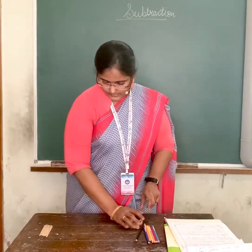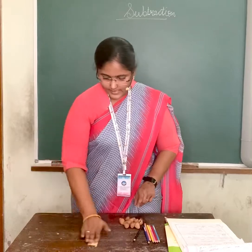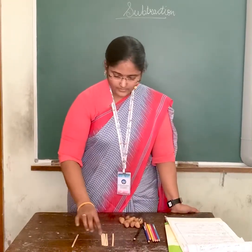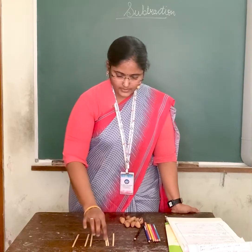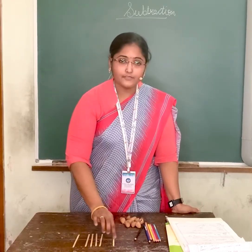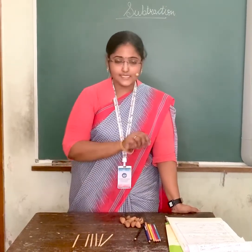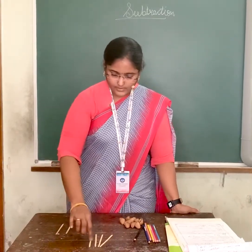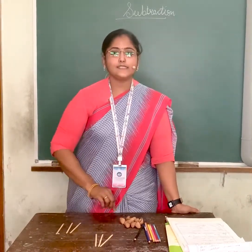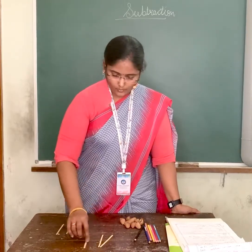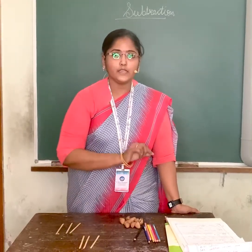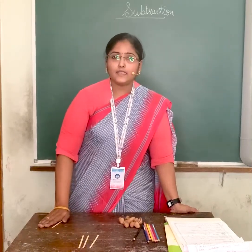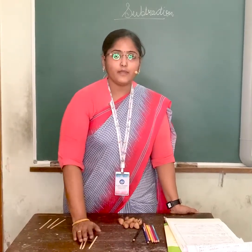Next, I have some sticks here. Let's count how many there are: 1, 2, 3, 4, 5, 6. From 6, I will take away 3: 1, 2, 3. Let's count how many are remaining: 1, 2, 3. So we have seen that from 6, if we take away 3 seeds, 3 will be remaining.